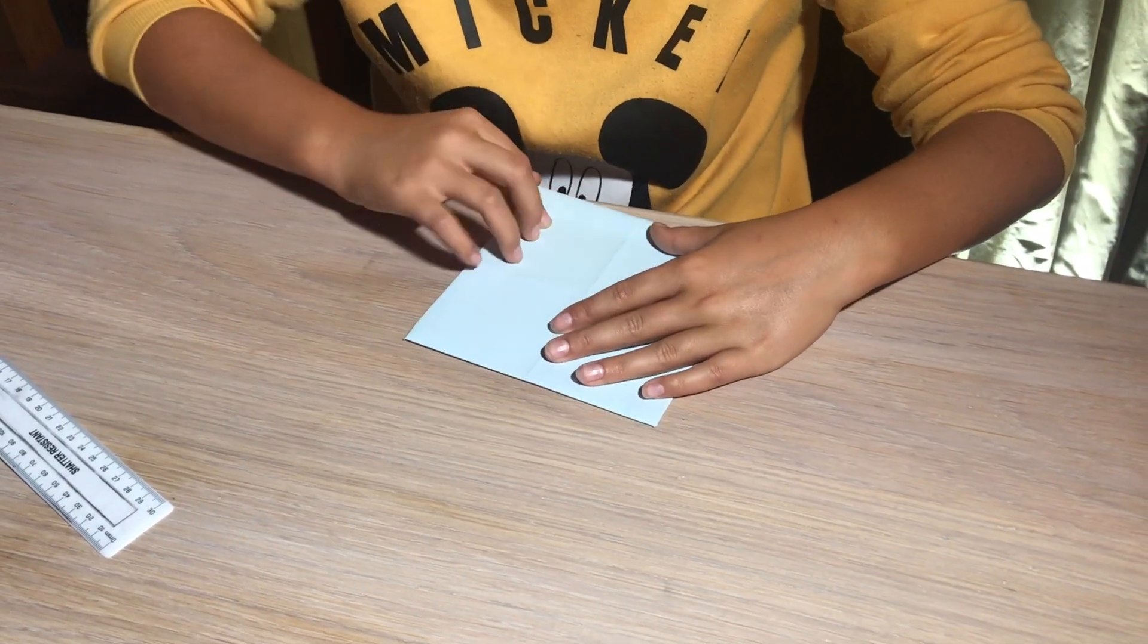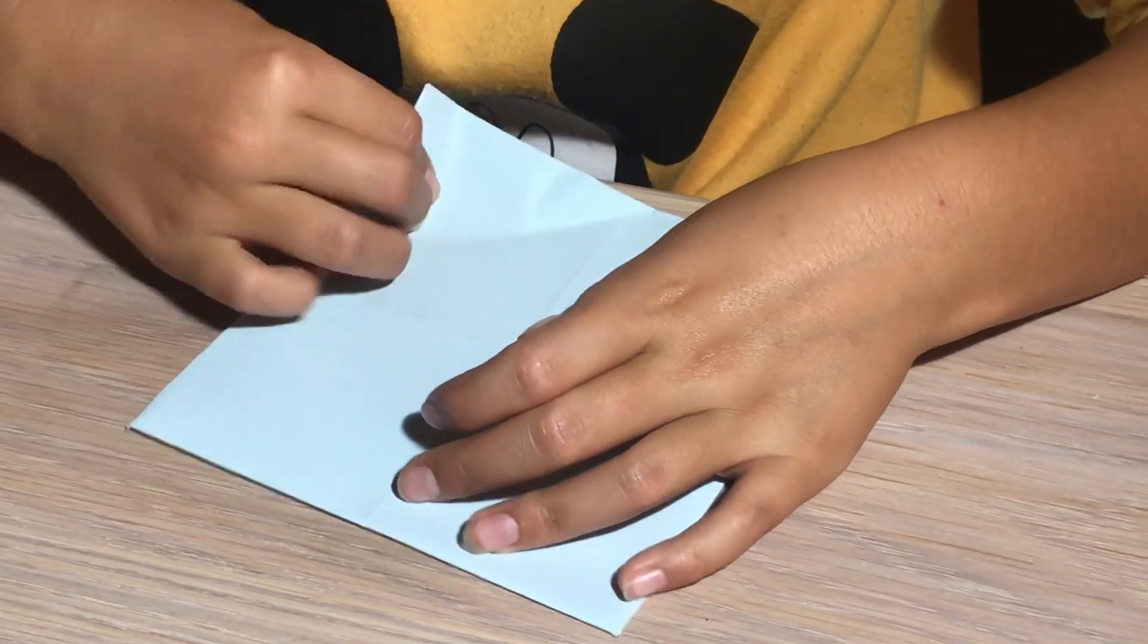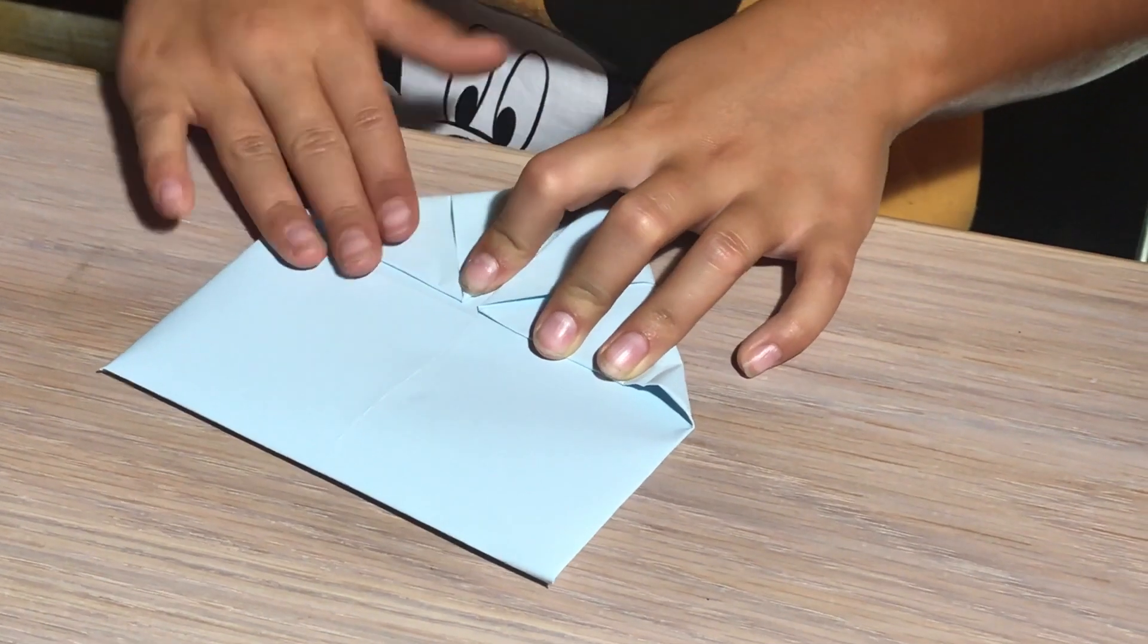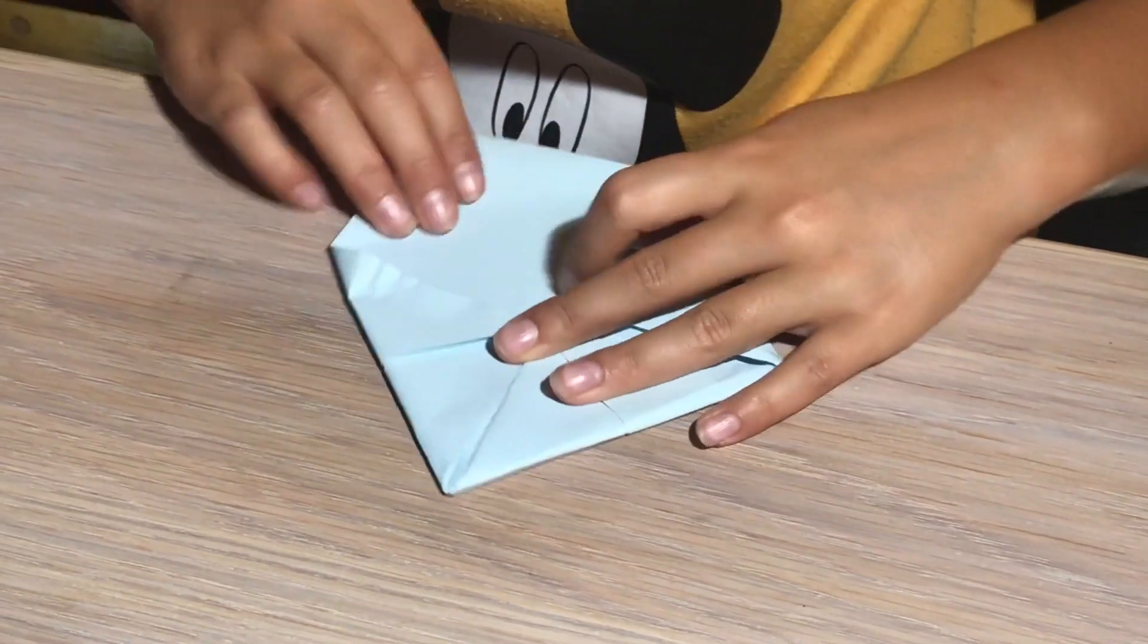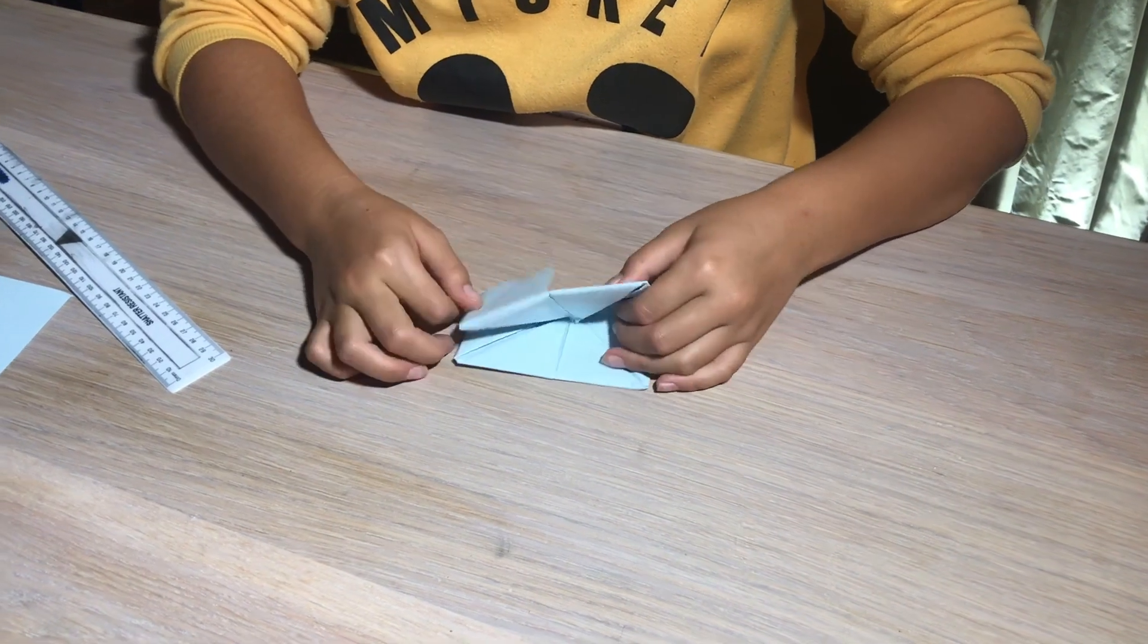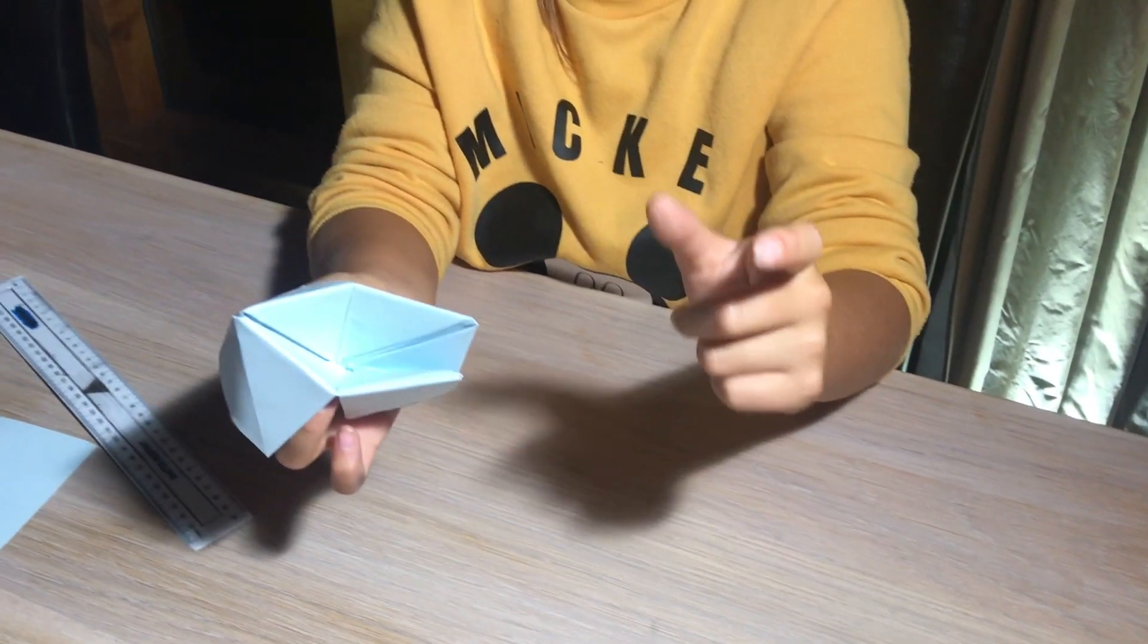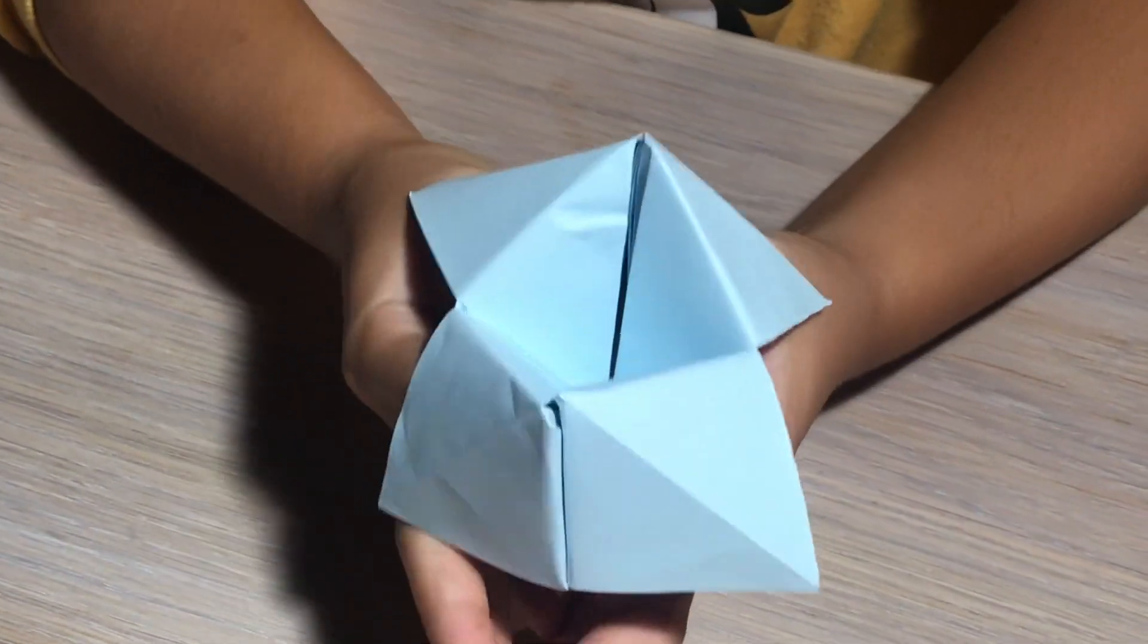You do exactly the same thing and you fold these into the middle. Then you just get something like this. So then you fold it in half and you get your thumb and your finger close to your thumb and you put them in. Then you get your thumb and your other finger and put it in here. Then you'll get a shape like this. And that is how you make a fortune teller.